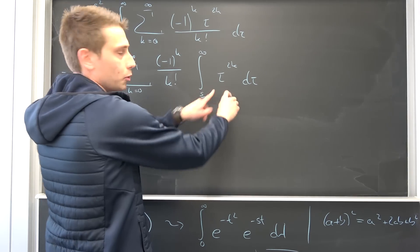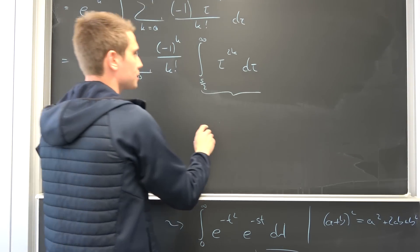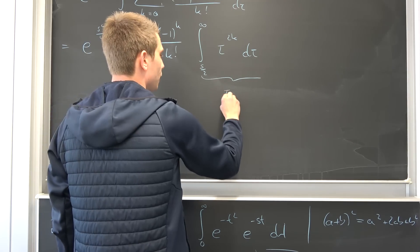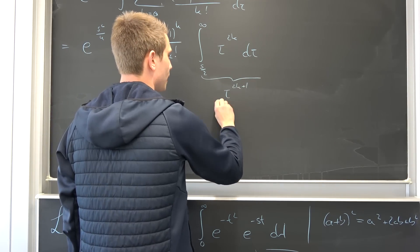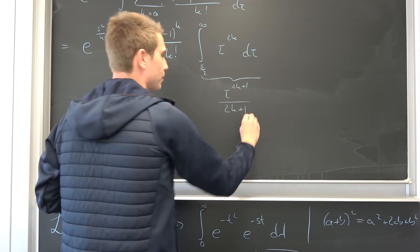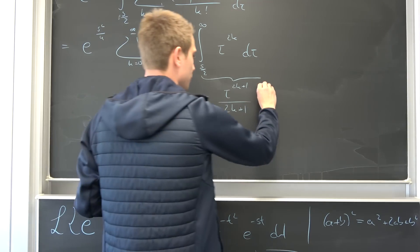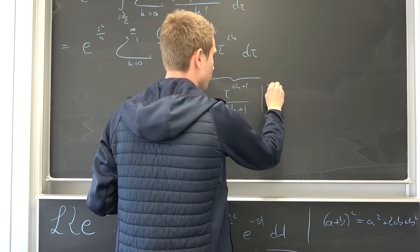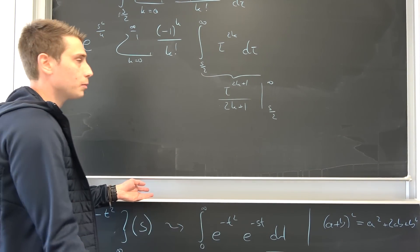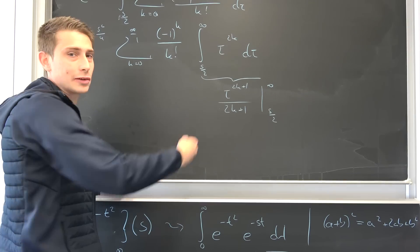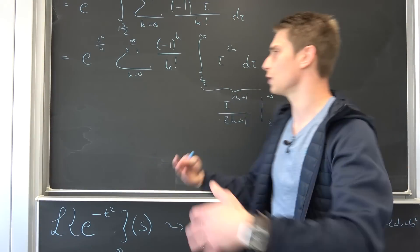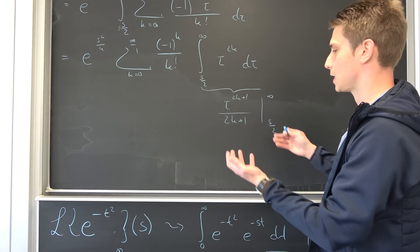And integrating a polynomial is actually quite easy, so this is going to give us tau to the 2k plus 1th power over 2k plus 1. Now we have to evaluate it from s over 2 to infinity and this is where another problem comes in. You can just solve this thing right here numerically. It doesn't have a nice closed form. I can't really say anything about it.